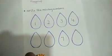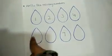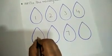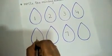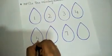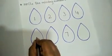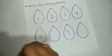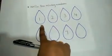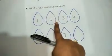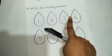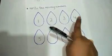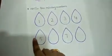Can you see the number five over here? No, so we have to write number five over here. Five is fat wearing a hat! One, two, three, four, five.